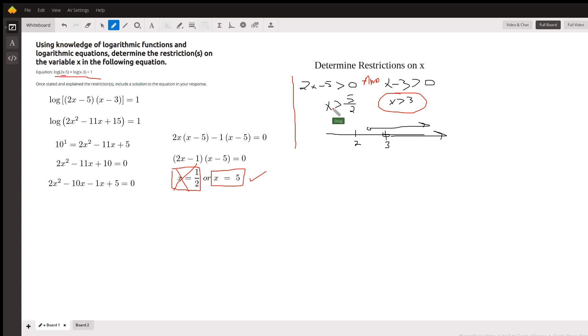So that means x has to be greater than 5 halves, 2.5, and x has to be greater than 3. If I draw a quick sketch of the solution sets on this number line, this is where they overlap. x is greater than 3. So x has to be greater than 3, otherwise you'll be taking a log of a negative number.